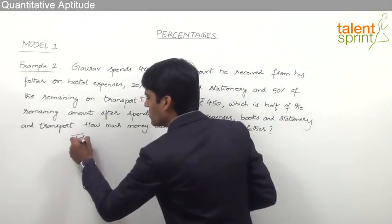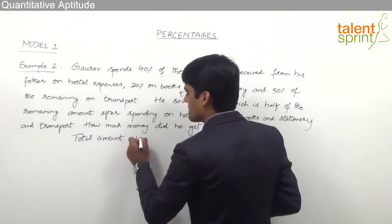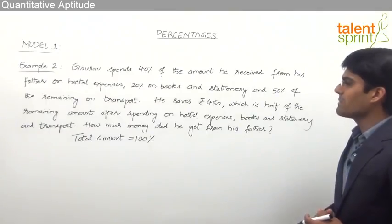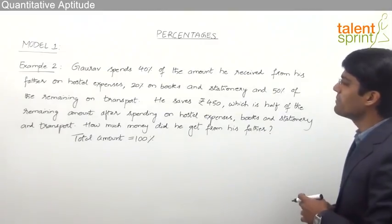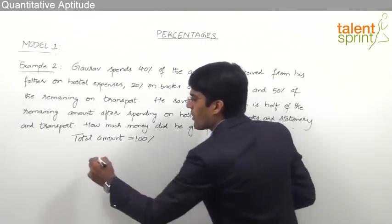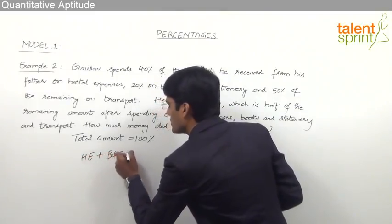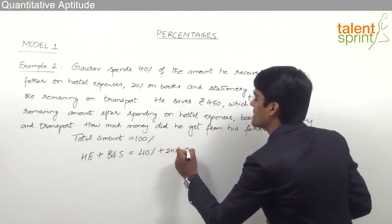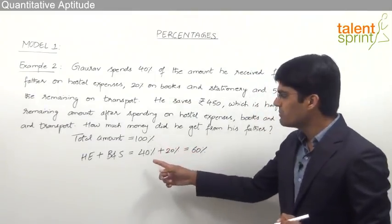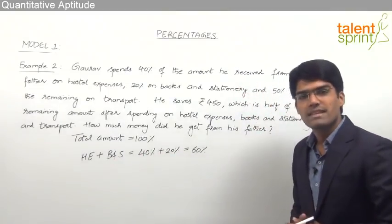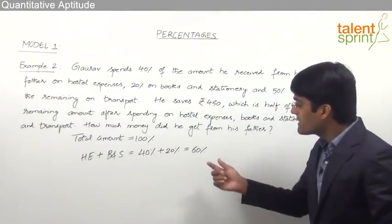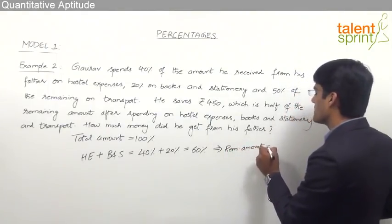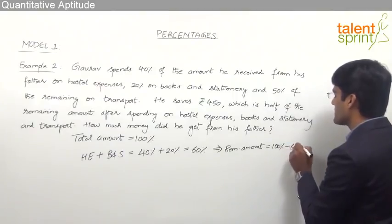As discussed earlier, let us assume that the total amount is 100%. So the total amount he got from his father is 100%. He has spent 40% on hostel expenses and 20% on books and stationery. The total amount spent on these two is 40% + 20% = 60%. Out of 100% that he has got from his father, 60% has been spent. So the remaining amount is 100% − 60% = 40%.